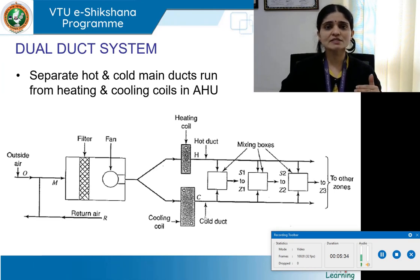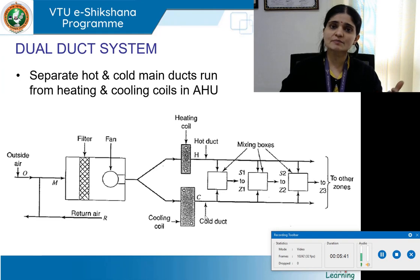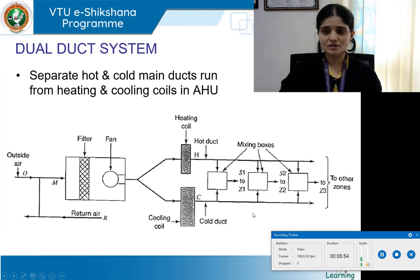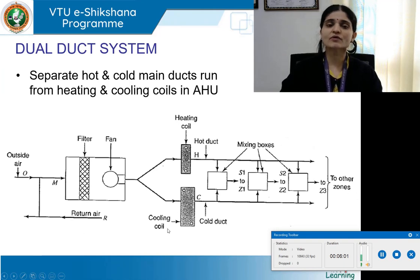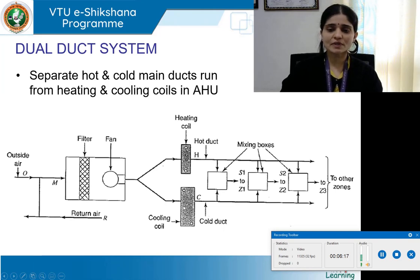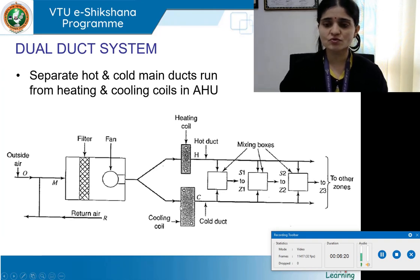If the objective is to cool the air, the mixed air passes through the damper and cooling coil. If heating is required during winters, it passes through the heating coil. The cooling coil leads to the cold duct (C) and the heating coil leads to the hot duct (H). These two ducts move ahead to mixing boxes, which serve various zones — zone 1 with its temperature, humidity, and air velocity parameters, and zone 2 with its own requirements — and then on to terminal AC units.